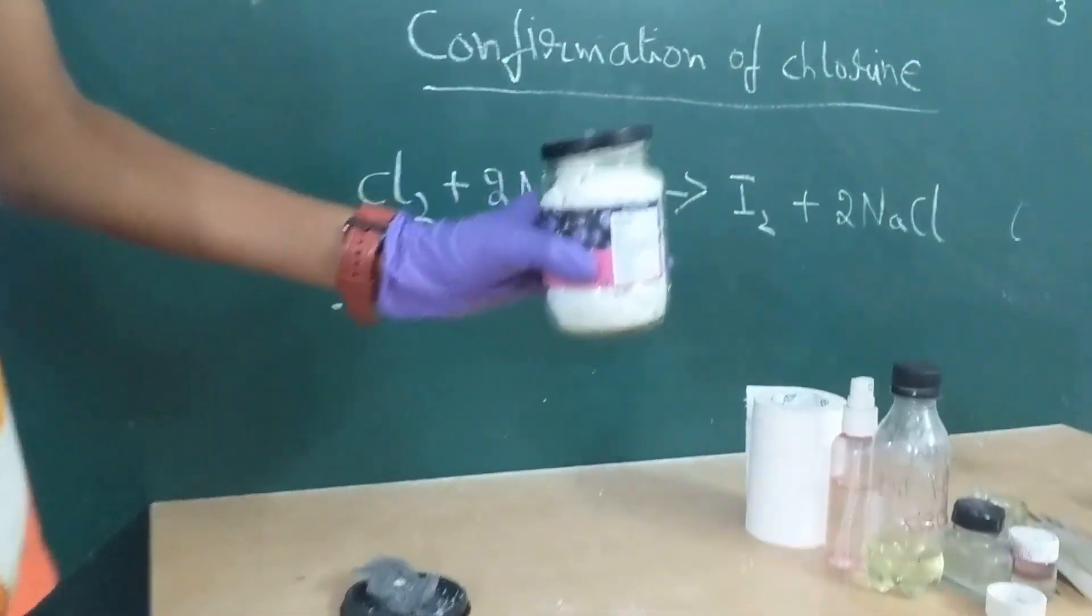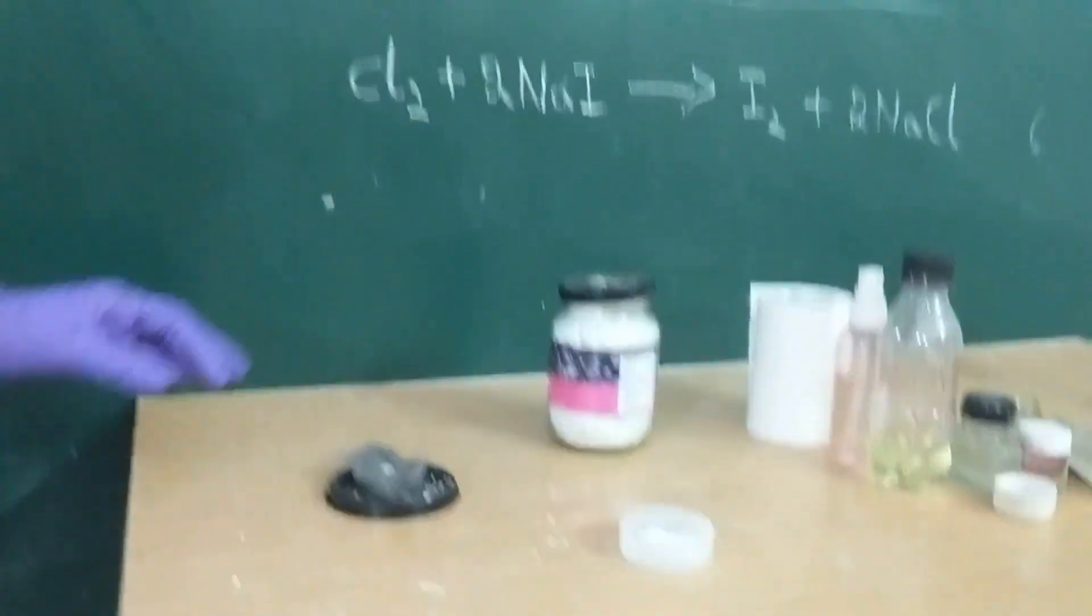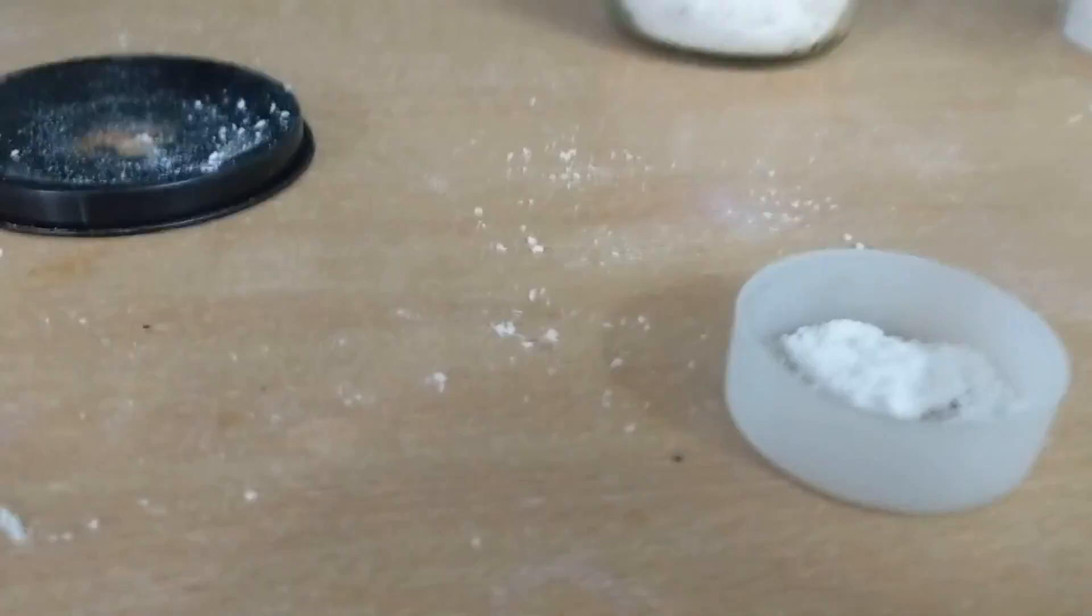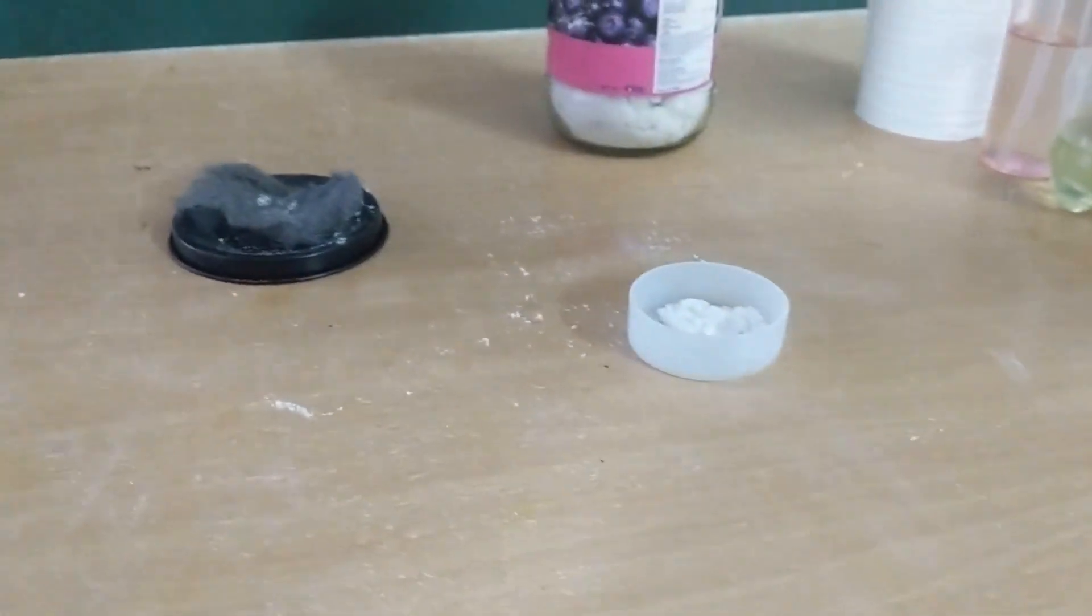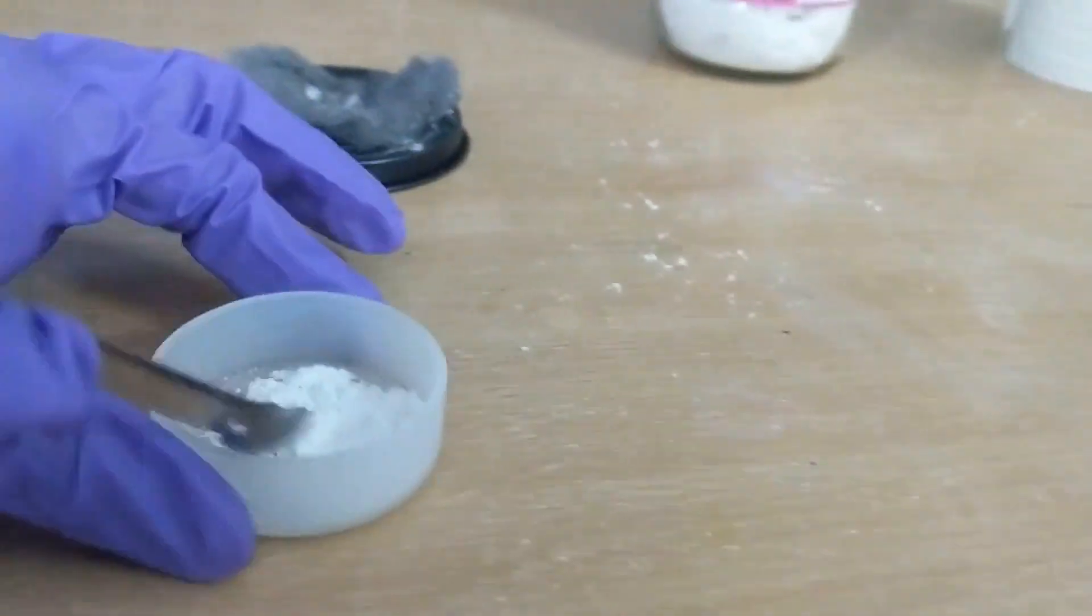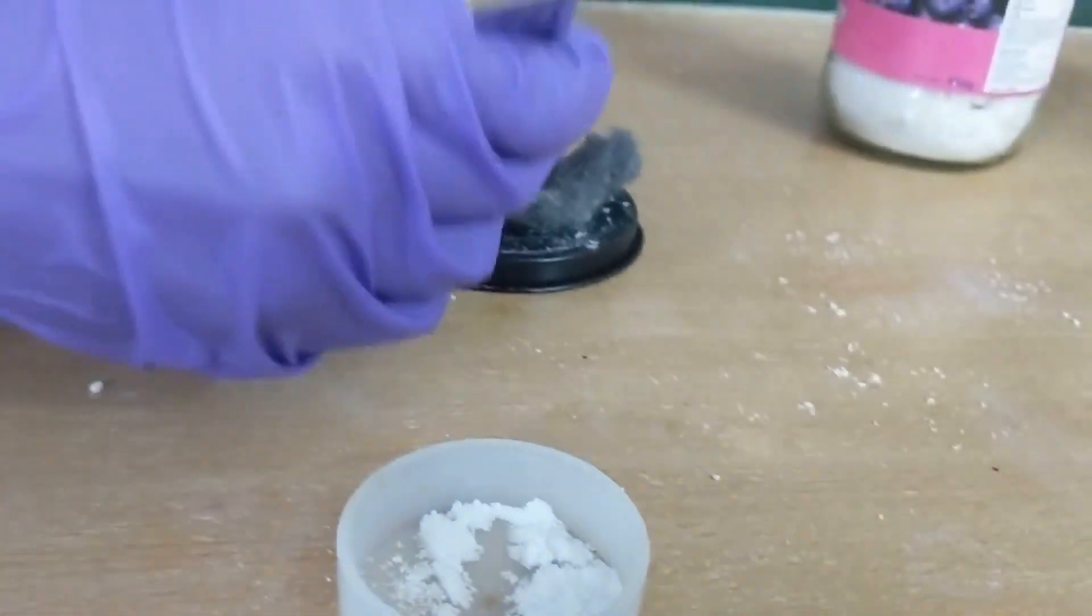This is potassium nitrate and I have placed it in this dish. This is steel wool. Now I am going to take a spatula and place a roughly equal mass of the potassium nitrate on the steel wool.